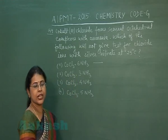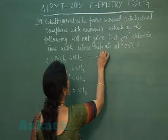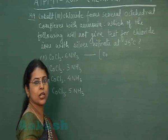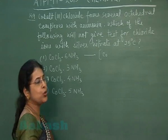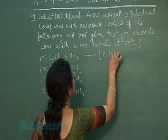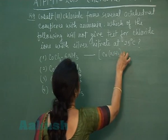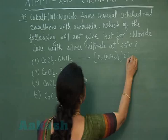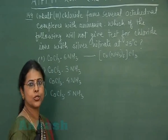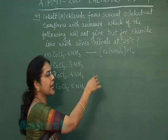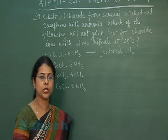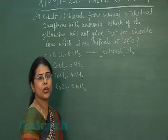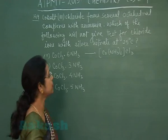First option: CoCl₃·6NH₃. Since the complex is octahedral and ammonia is a neutral ligand, all six ammonia molecules are present as ligands. The formula becomes [Co(NH₃)₆]Cl₃. The chloride ions are present in the ionization sphere, so when AgNO₃ is added, this complex will give a white precipitate of AgCl.